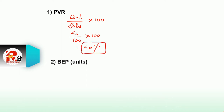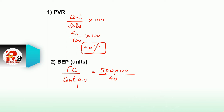Next point: BEP in units. Formula: fixed cost divided by contribution per unit. Fixed cost is Rs. 5,00,000 and contribution per unit is Rs. 40. So BEP in units = 5,00,000 ÷ 40 = 12,500 units. That is BEP in units.